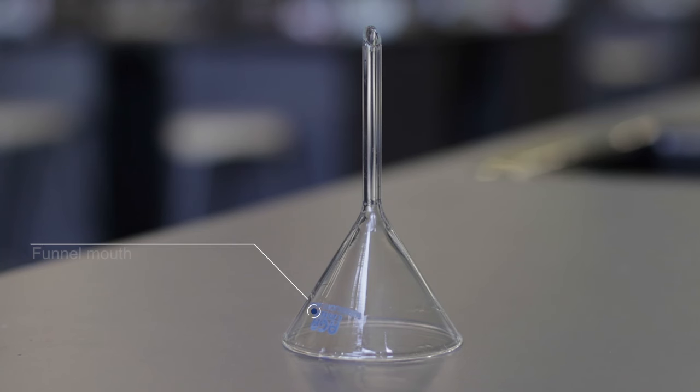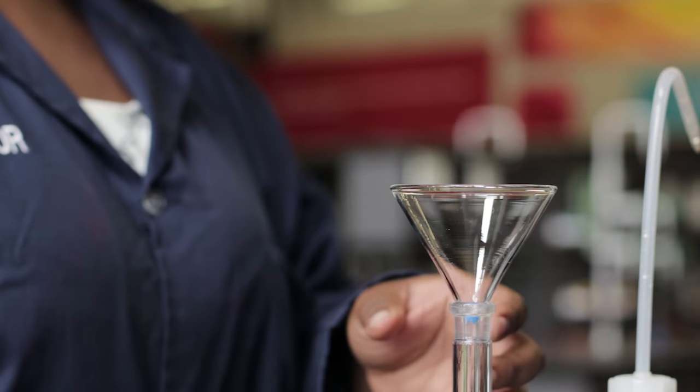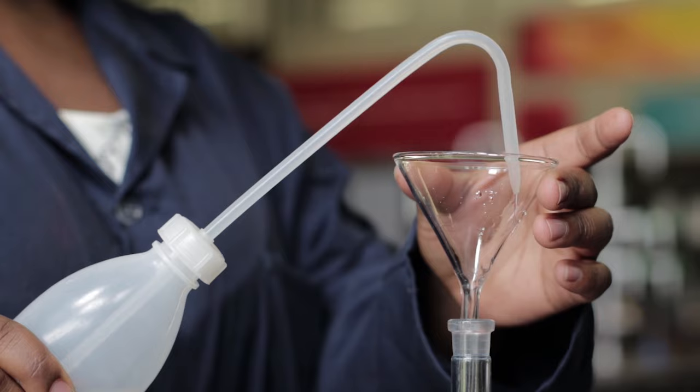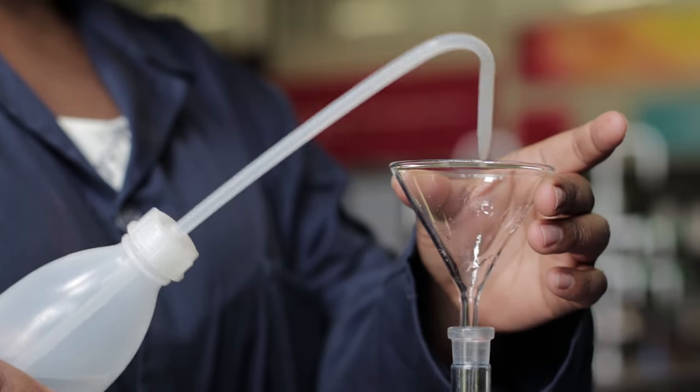A glass funnel has a wide mouth and narrow stem. A glass funnel is used when a solution or a solid needs to be added to a flask or a burette without spilling.